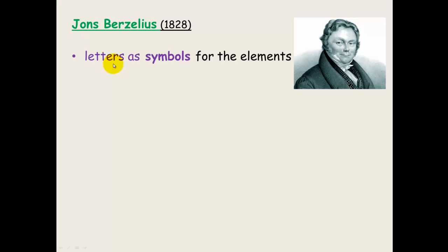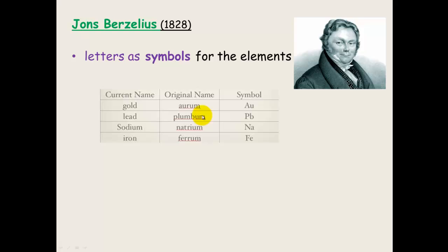Jöns Berzelius. He was the first guy to decide to use letters as symbols and they came from old words, sometimes Latin words. So for instance iron was ferrum and he called it Fe. Sodium was natrium and Na and so on. And we still use a lot of those today.